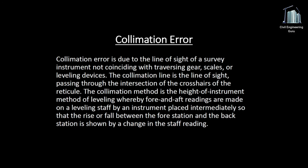Collimation error is due to the line of sight of a survey instrument not coinciding with traversing gear scales or leveling devices. The collimation line is the line of sight passing through the intersection of the crosshairs of the reticule. The collimation method is the height of instrument method of leveling, whereby fore and aft readings are made on a leveling staff by an instrument placed intermediately, so that the rise or fall between the fore station and the back station is shown by a change in the staff reading.